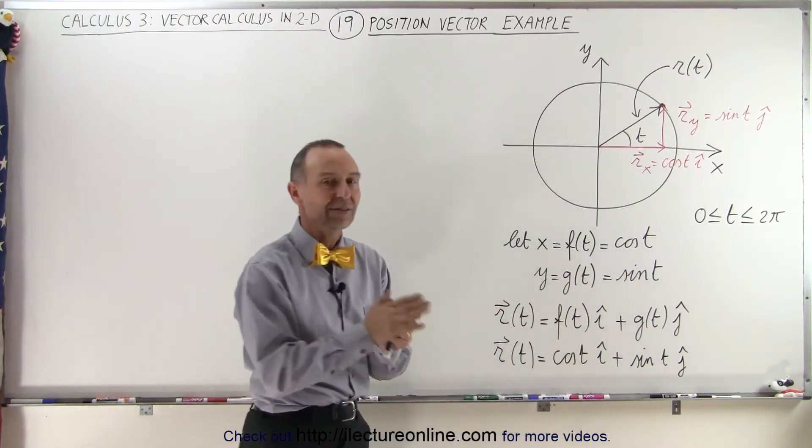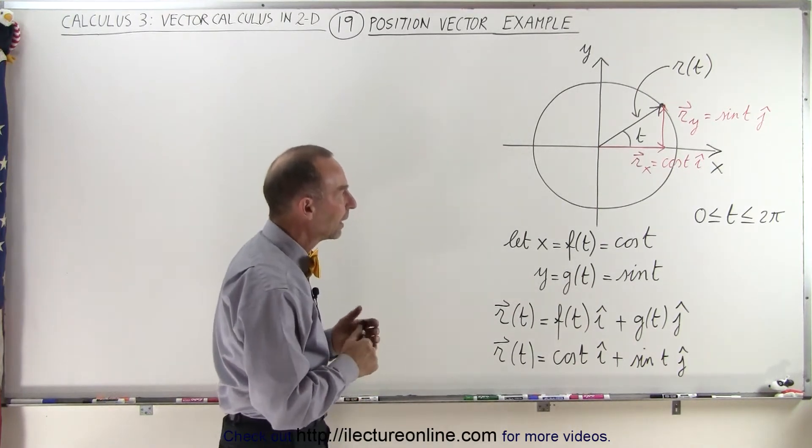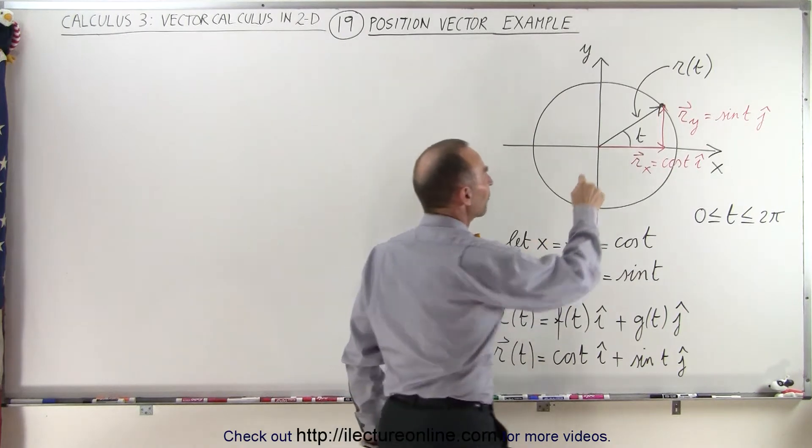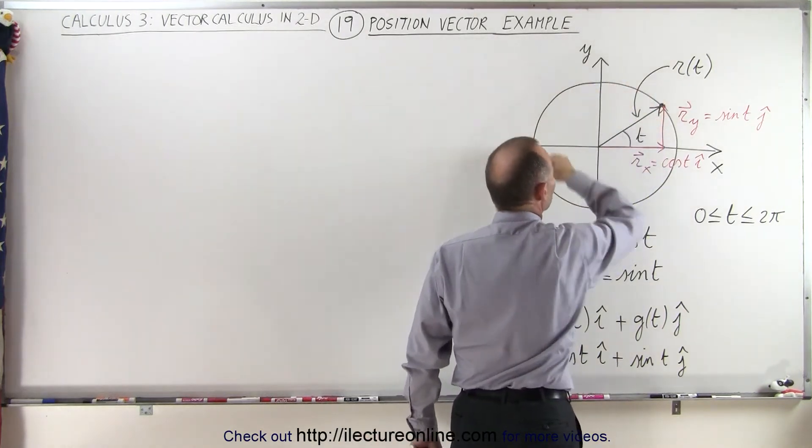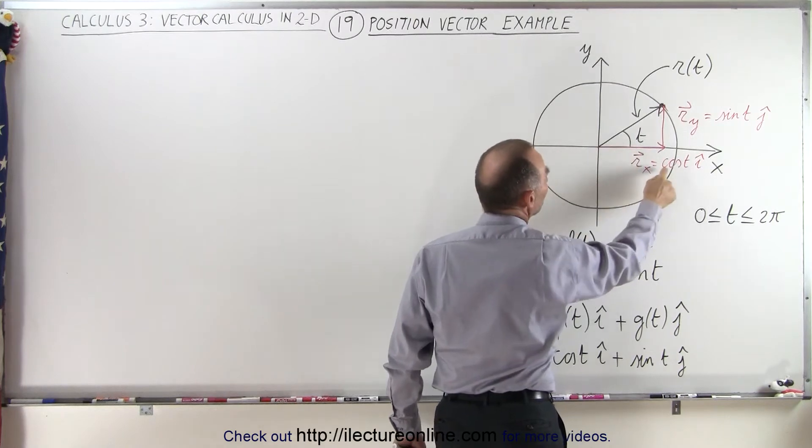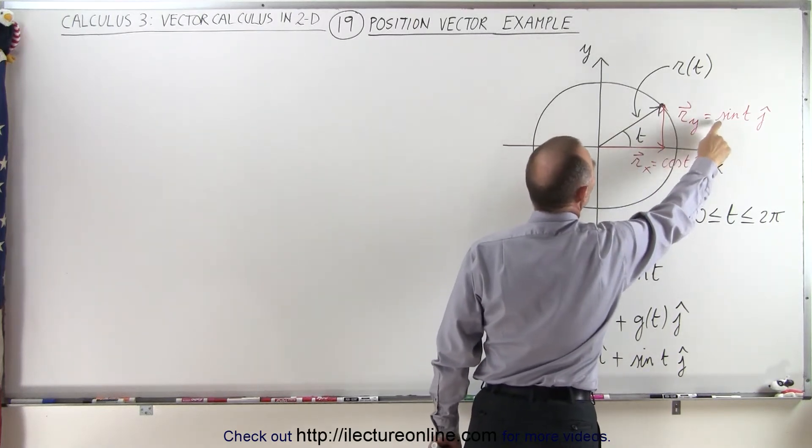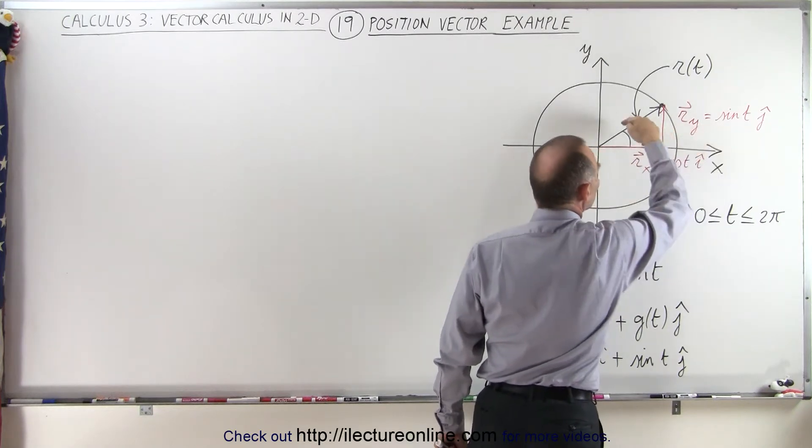And of course t is limited between 0 and 2π, so you only need to go around the circle once. The position vector is simply a vector that points to some point on the circle. And you can see that the x component of that would simply be the cosine of t in the i direction.